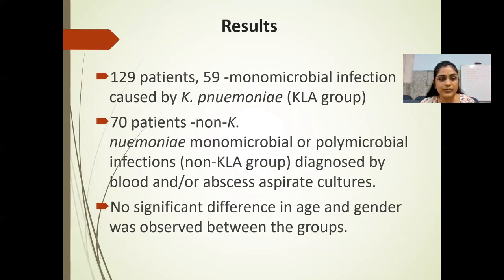Results: out of 129 patients, 59 monomicrobial infections were caused by Klebsiella pneumoniae (KLA group), and 70 patients had non-Klebsiella pneumoniae monomicrobial or polymicrobial infection (non-KLA group), diagnosed by blood and/or abscess aspirate cultures.